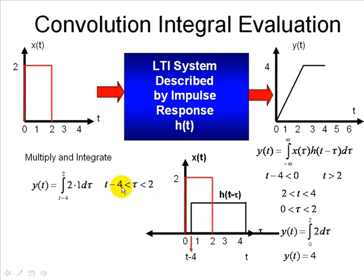So t minus 4, less than tau, less than 2. So that's what our tau here. When we integrate that, that implies that t is less than 6 for this case. And then, we can see that integrating for this case from 2 to t minus 4, evaluating this would be minus 2t plus 12.